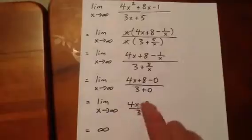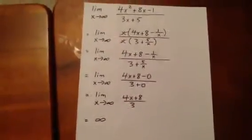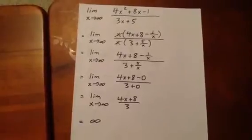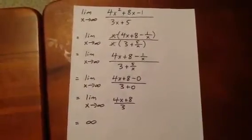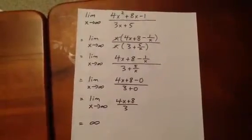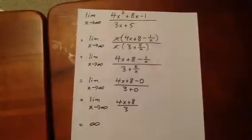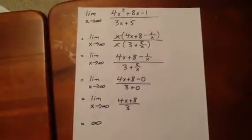So we have the limit as x goes to infinity of 4x plus 8 over 3. Now, this has been simplified a bit, and we see that what we have is a numerator that's growing without bound, and a denominator that's constant. When you have a numerator growing without bound, and a denominator that's constant, the limit doesn't exist, or we can say the limit is equal to infinity.